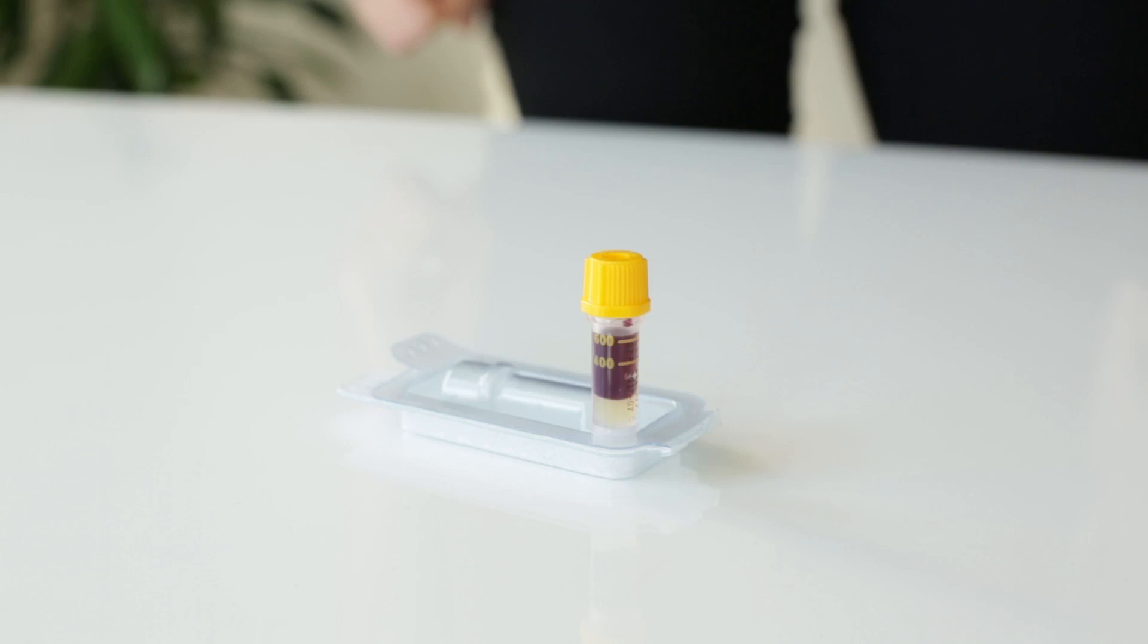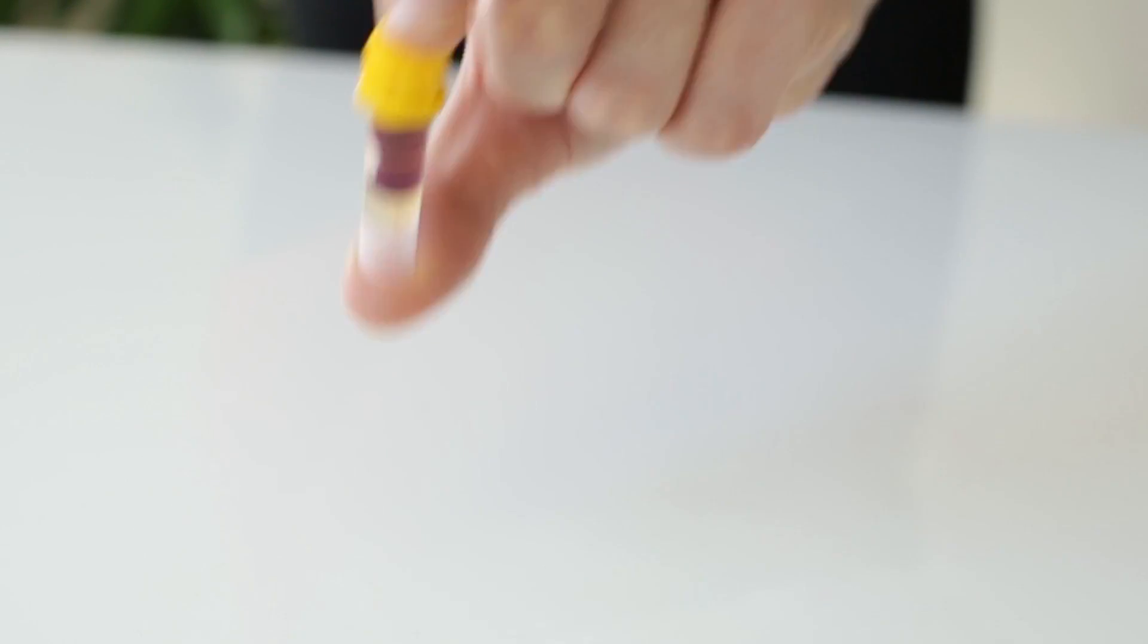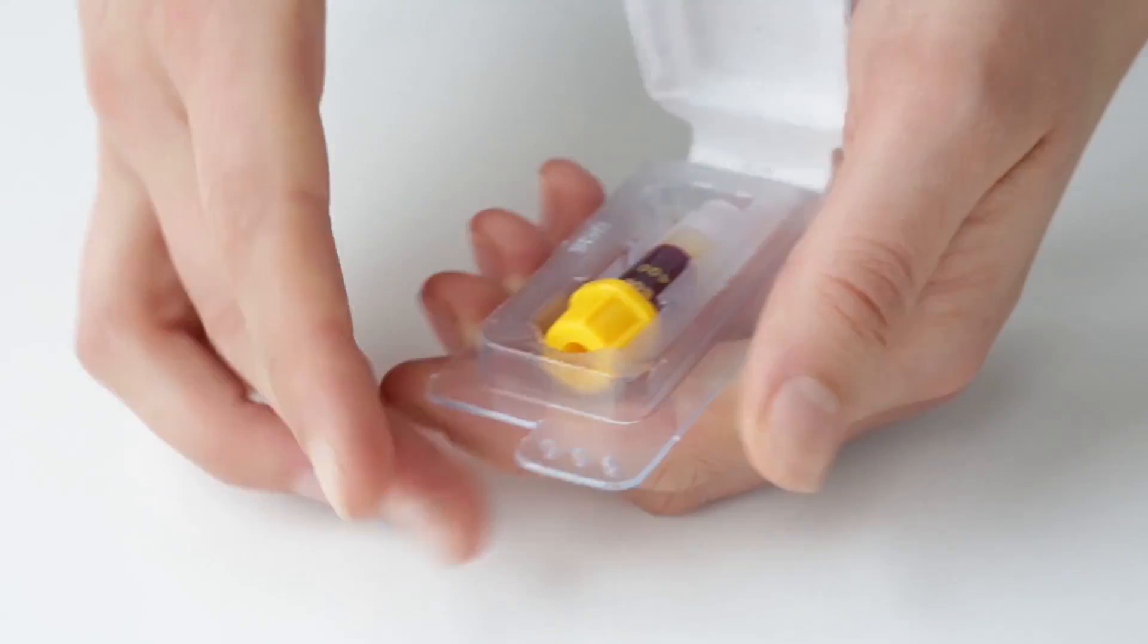Push the yellow cap firmly back onto the tube. Gently turn the tube upside down five times, then place it back into its protective packaging.